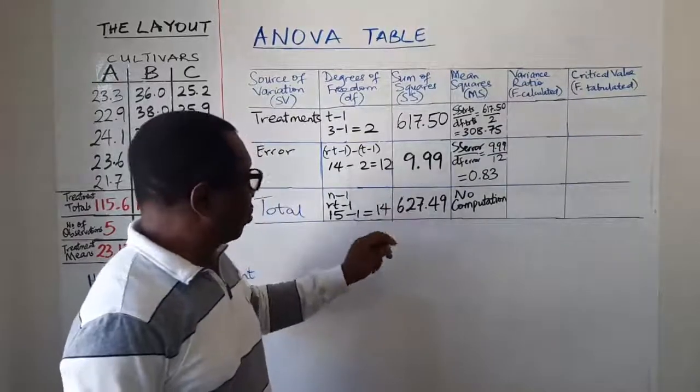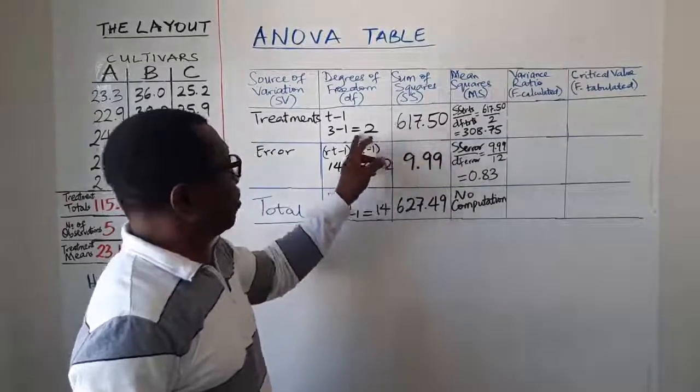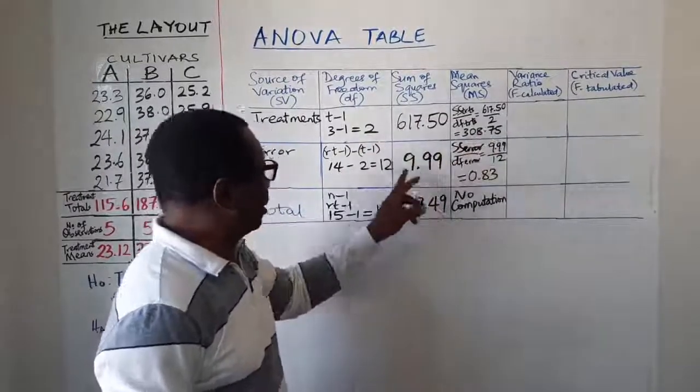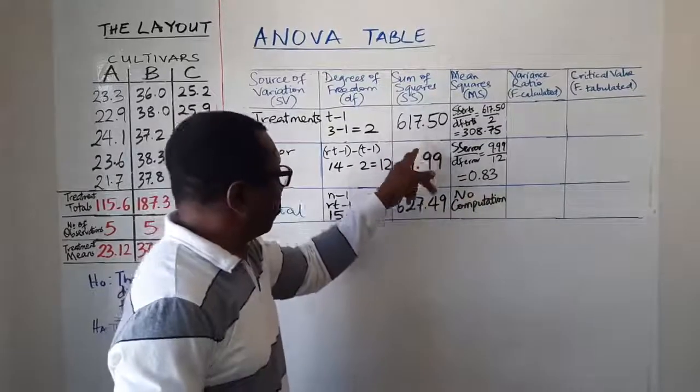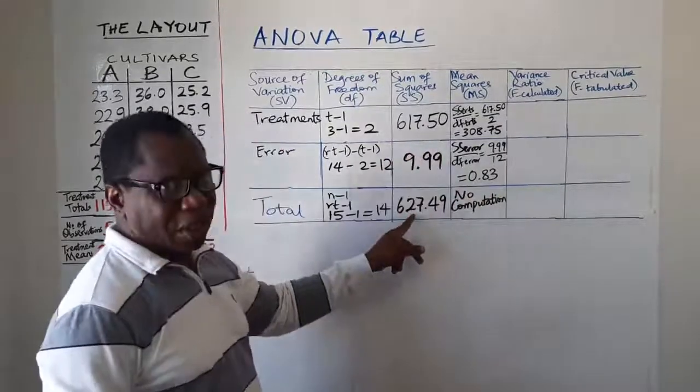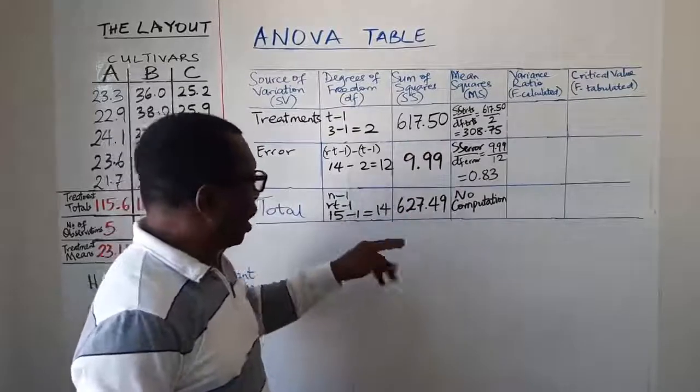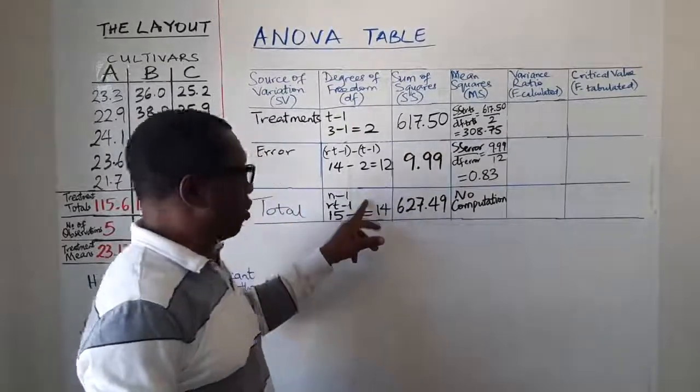If you want to check that you can easily find it out. For example, we said this divided by this gives us this. This divided by this gives us this. And we know that this plus this gives us this, right? Now, if you go ahead and divide this by 14, that's this SS total by 14.